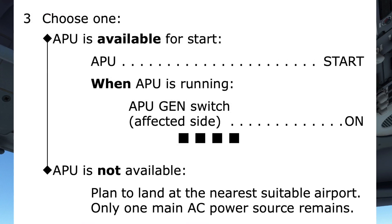Step 3 is also conditional, and depends on whether the APU is available for start. Our APU is available, so we choose the first option, which directs us to start the APU, and when the APU is running, to turn the APU generator switch on the affected side to the on position. Let's do that now.